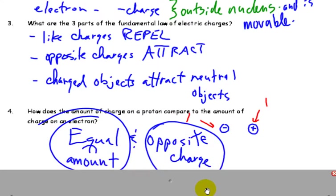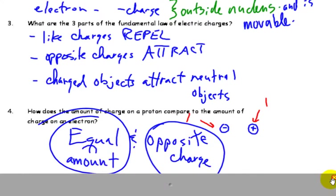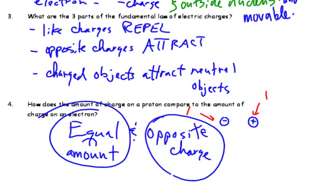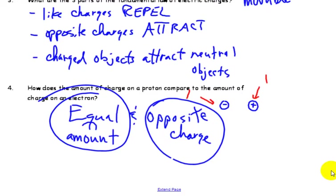As the amount of charge on a proton compared to that of an electron, we say that they are equal, but they are opposite charges. So one electron, one proton, they're equal in terms of how much charge, but opposite in terms of the charge value themselves.